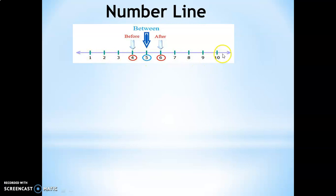With respect to Class 1, we will be limiting to learning concepts like after numbers, before numbers, and between numbers on a number line. This is a number line with numbers 1 to 10. You can have a number line with numbers up to 20, or from 20 to 30, or 30 to 40 and so on. Here we are using a number line with numbers 1 to 10.